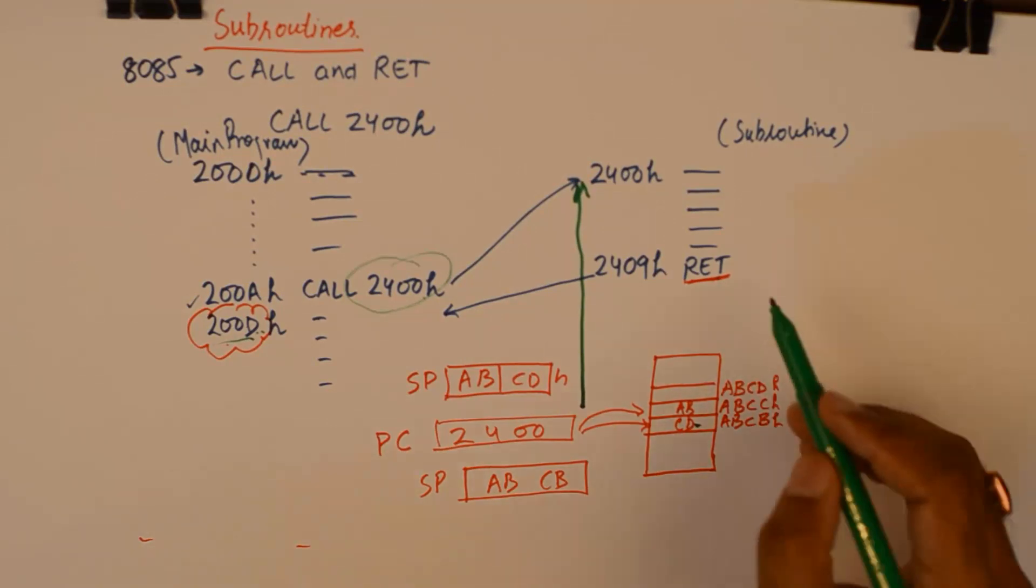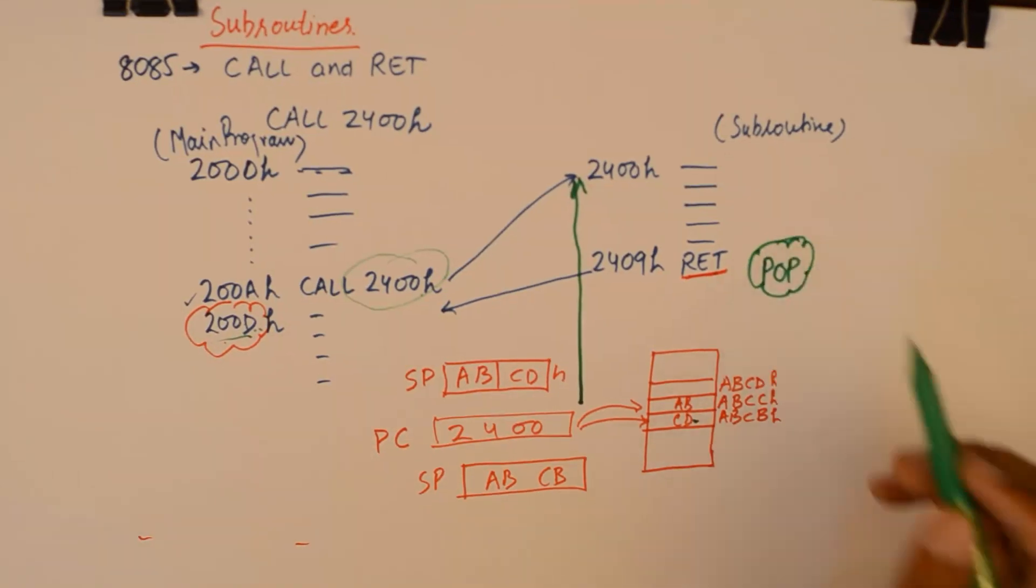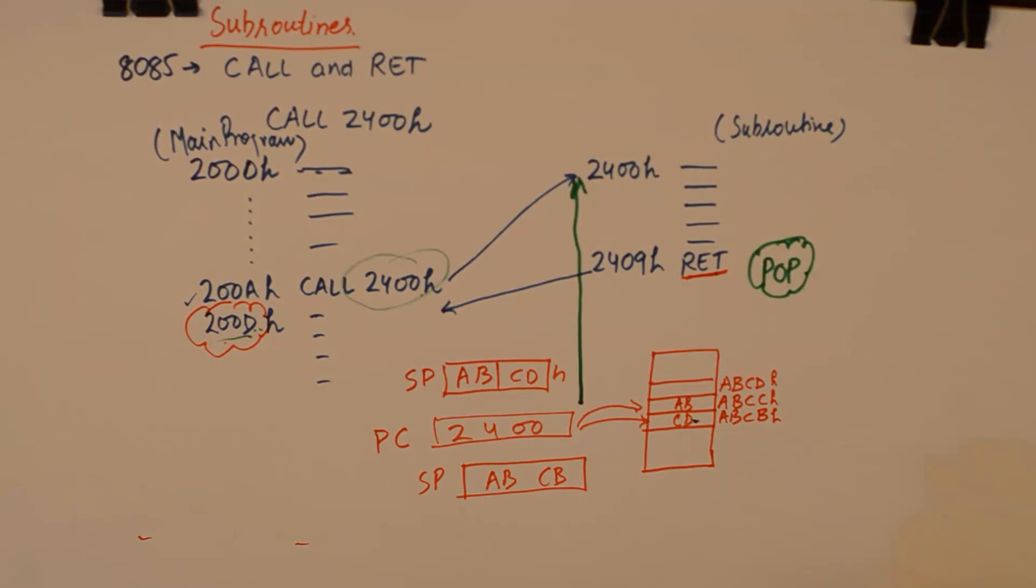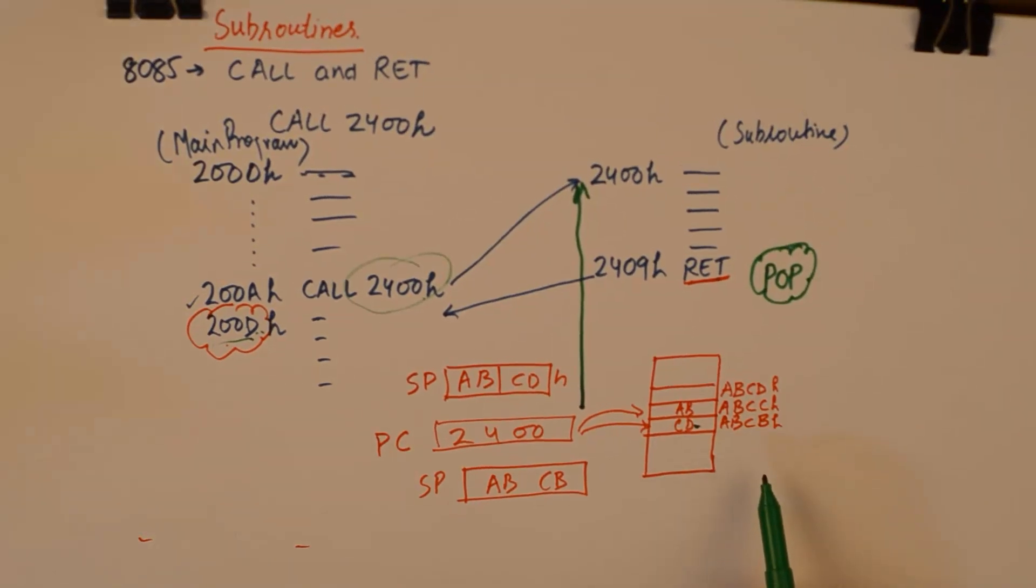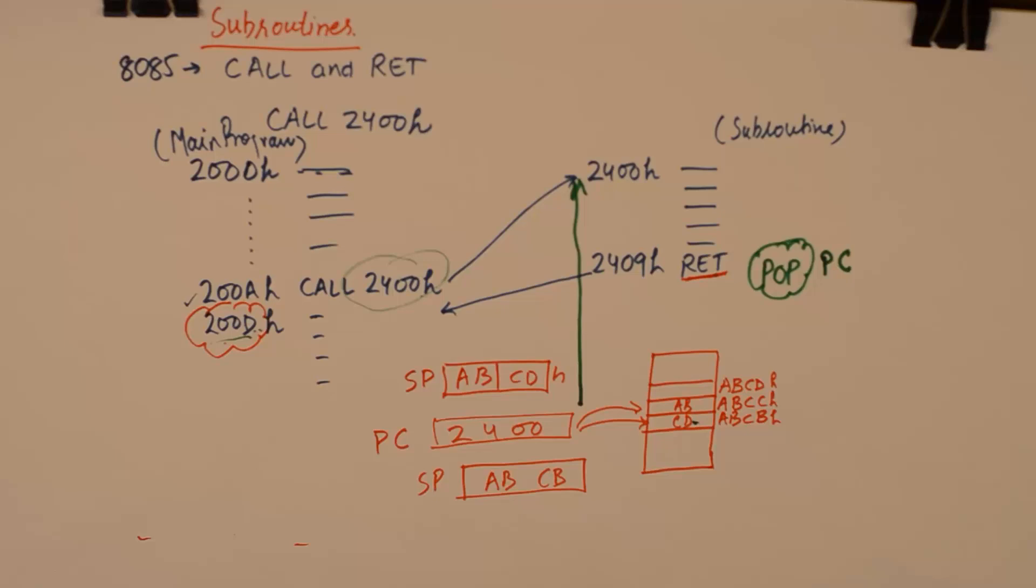And return is similar to pop instruction. So it is analogous to pop instruction. It pops the thing from the stack and it pops the thing into the program counter register. So return is analogous to pop PC. So it will take two bytes from the top of the stack.